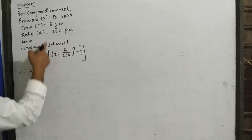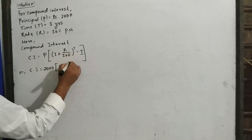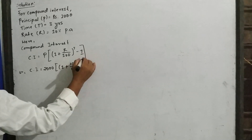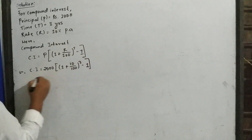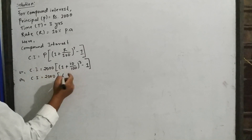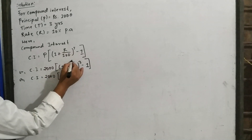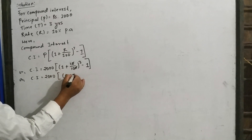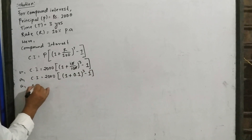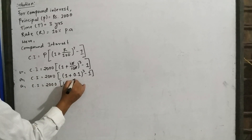Compound interest is equal to P times (1 + R/100)^T − 1. Substituting values: P is 2000, R is 10, T is 3. So compound interest equals 2000 × (1 + 10/100)^3 − 1. Simplifying 10/100 gives 0.1, so compound interest equals 2000 × (1.1)^3 − 1.